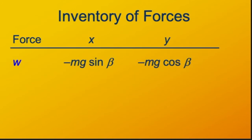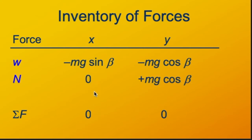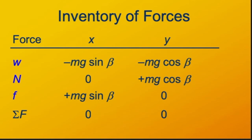Now we can inventory all the forces in a table showing their x and y components. The normal force has zero x component because it's entirely directed in the y direction. Since the y component of the net force has to be zero, the normal force — being a force of constraint — just has to be whatever it takes to make that so. Its y component must be opposite the y component of the weight, so that's positive mg cosine beta. The friction force, also a constraint force here, must be opposite the x component of the weight to keep the block from sliding downhill, making it positive mg sine beta.